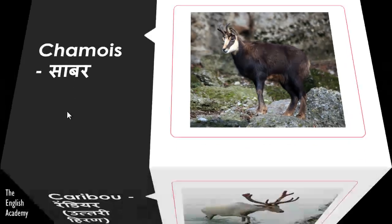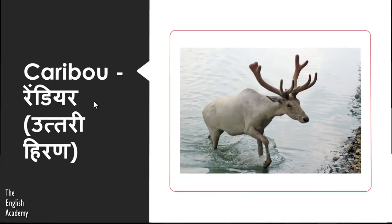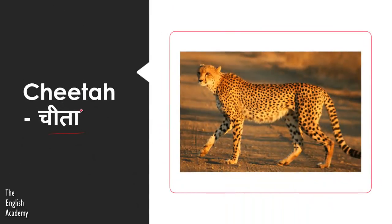The next animal is Reindeer, also called Uttari Hiran. In English, it is called Caribou or Reindeer. The next animal is Cheetah — Cheetah is called Cheetah in English as well.